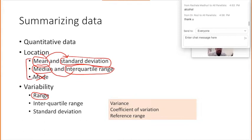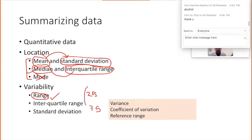You may want to know what is the mean age or the median age, but you also want to understand the data by seeing how much variability there is. For variability, there is the range — just the minimum and maximum value, and the difference between the two gives you the range. Then there is the interquartile range: you put the data in ascending order, take the 25th percentile value and the 75th percentile value — between those two is the interquartile range. The software will do it for you.